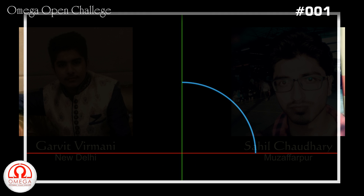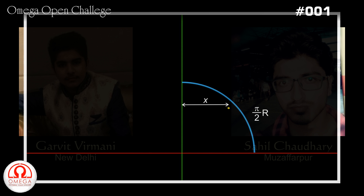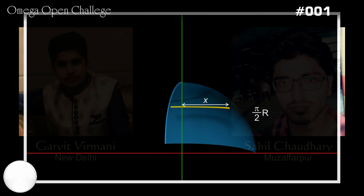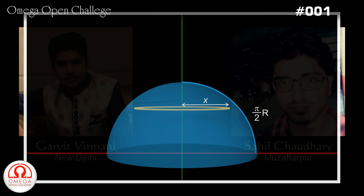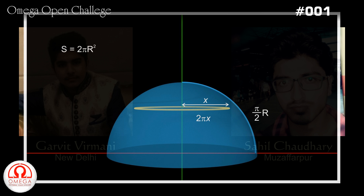The length of the quarter circular ring is pi by 2 into r. Let the x-coordinate of the center of mass of the quarter ring be x. If we rotate it about the y-axis, we get a hemisphere whose surface area we know to be 2 pi r squared. When we rotate the ring about the y-axis, the center of mass travels a distance equal to the circumference of the circle, which is 2 pi x.